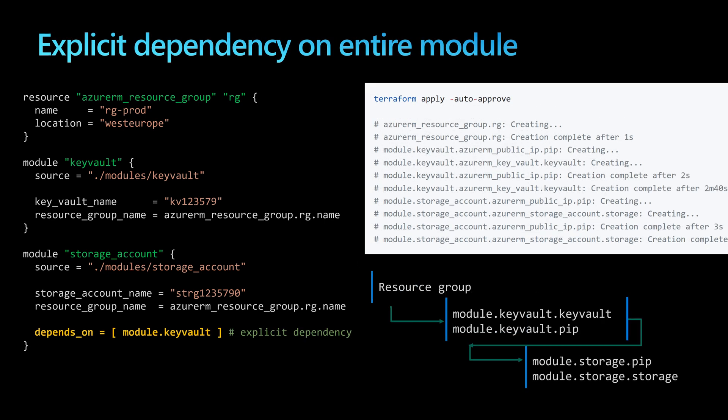In the second experiment, we have an explicit dependency on the entire module. This means we are using the depends_on keyword from the second module in order to reference the first module. What will happen when we apply this configuration?